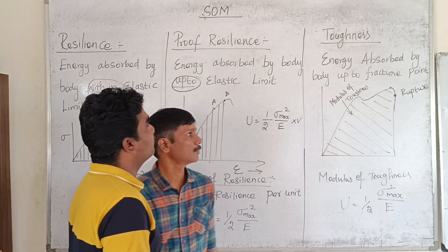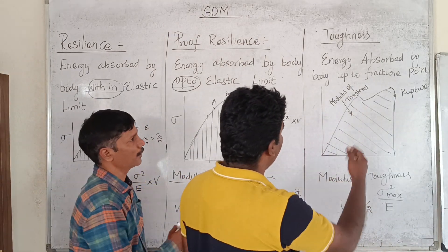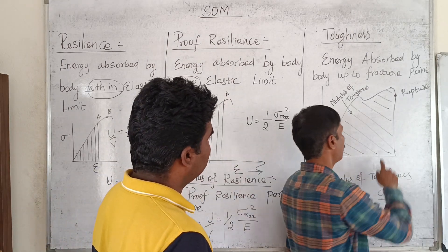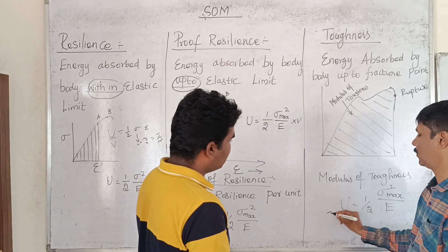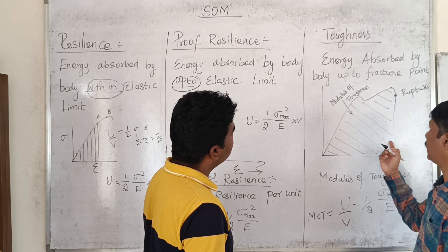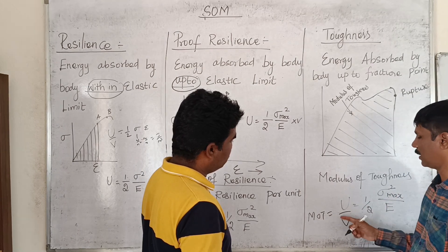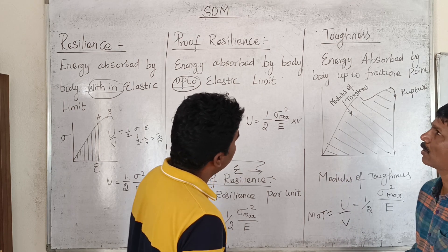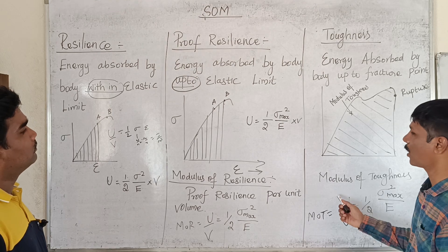Toughness is energy absorbed by the body up to the fracture point. At the fracture point, we use the full area under the stress-strain curve. The modulus of toughness formula is sigma squared divided by 2E. So resilience, modulus of resilience, toughness, and modulus of toughness are the key terms.